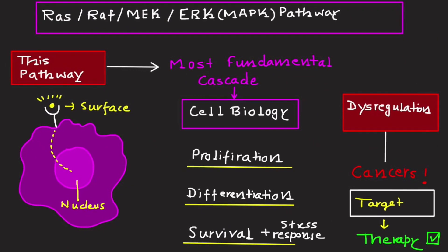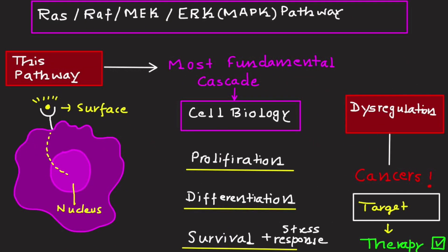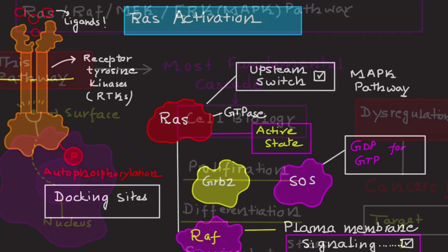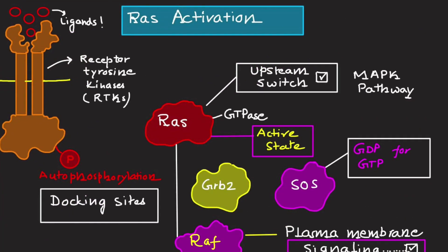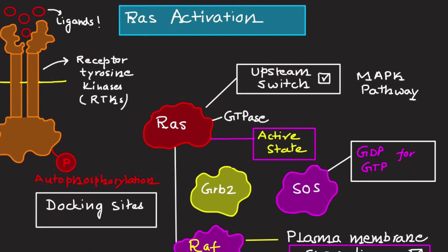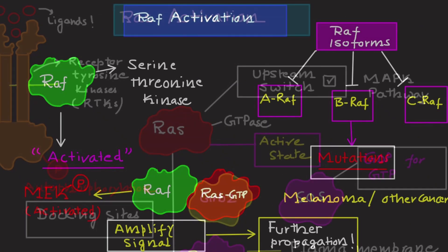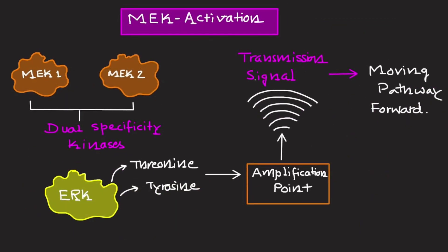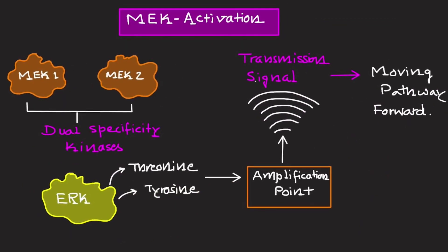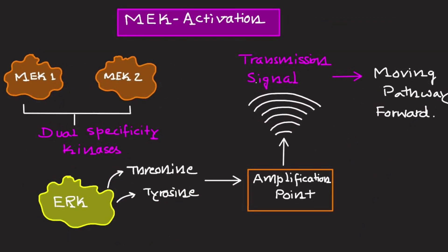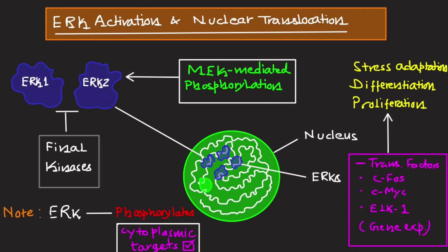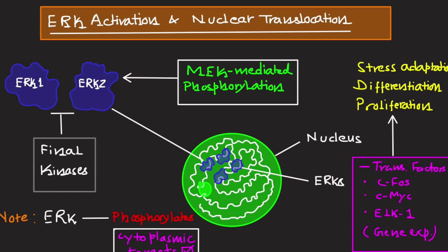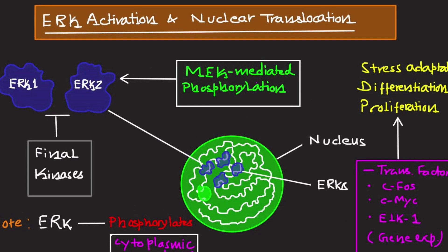Hello everyone, welcome to today's video. Today we will be understanding the RAS-RAF-MEK-ERK pathway. In this video we will be learning about RAS activation, RAF activation, MEK activation, and how ERK activation works and how that gets translated into nuclear translocation or expression of various genes.